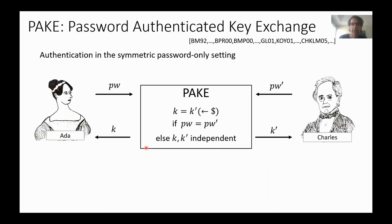I'll start by recalling what PAKE is. PAKE is a protocol where two parties contribute passwords, and if those passwords are the same, the two parties compute the same random session key. Otherwise they get independent keys, and this implies authentication because if the two passwords differ, the key of one party leaks nothing about the key of the other party.